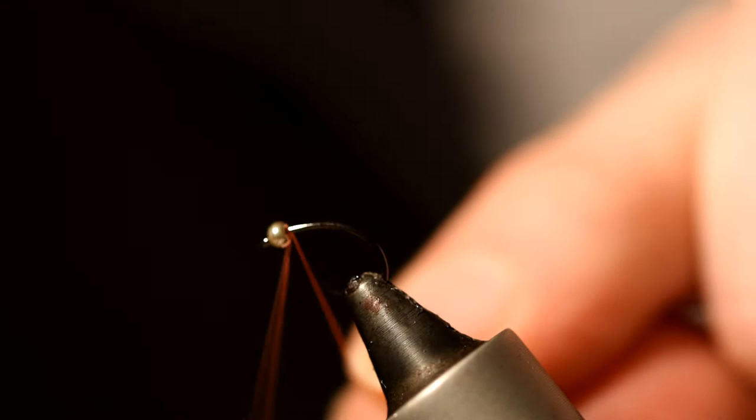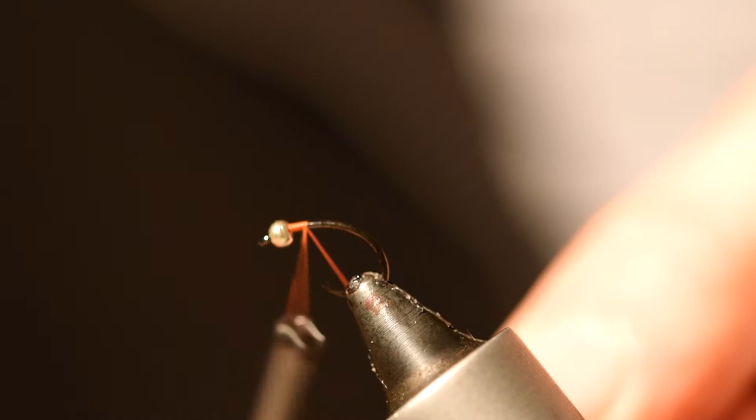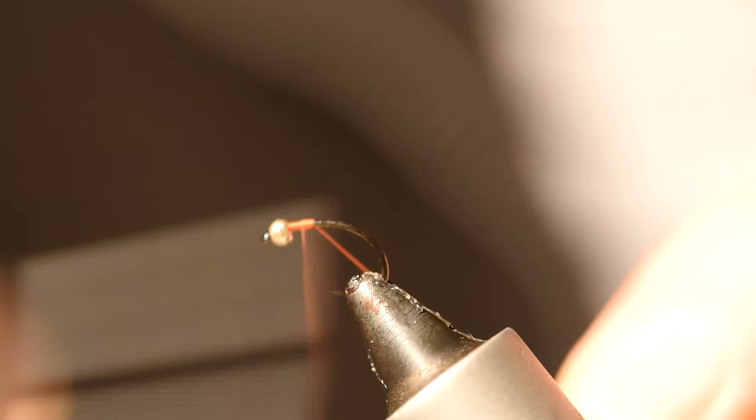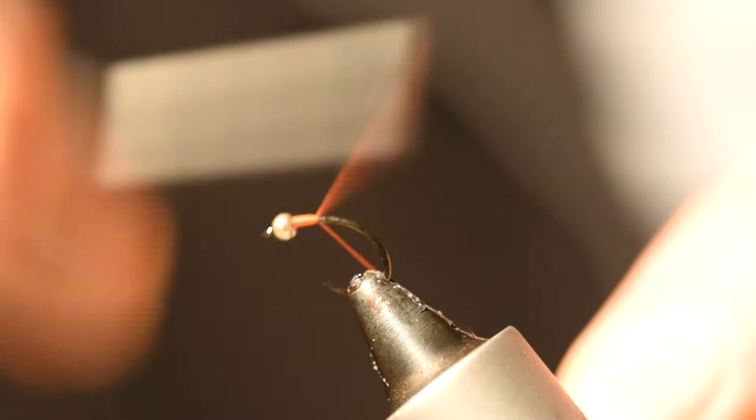Get tied in at the back of the bead. Because it's UTC, you can keep flattening the thread out by spinning your bobbin anti-clockwise, and that helps you get a nice thin profile. You can use uni if you want, but I think UTC is a bit better.